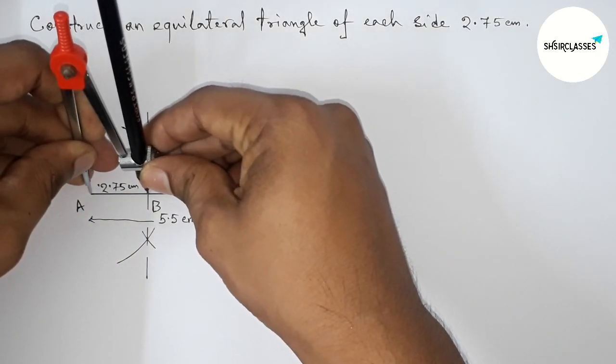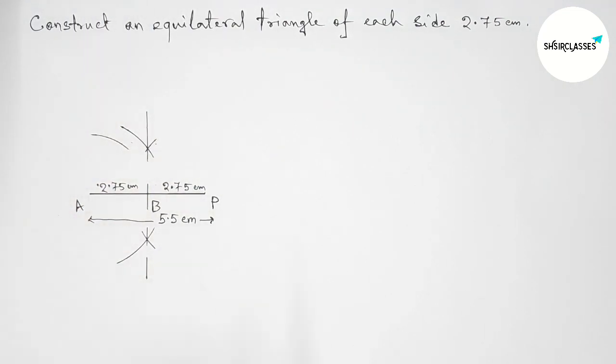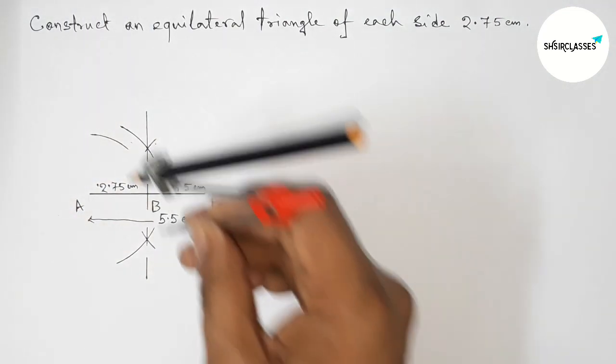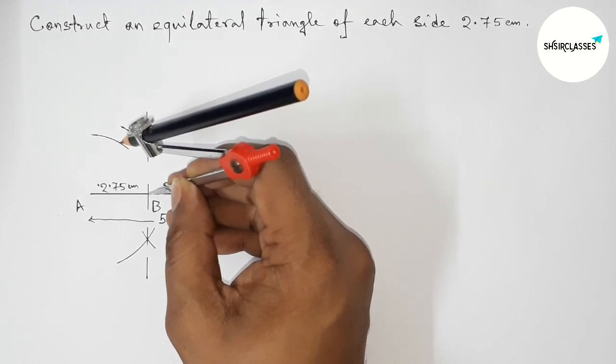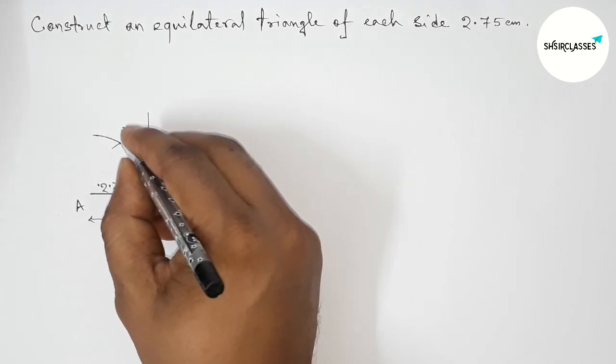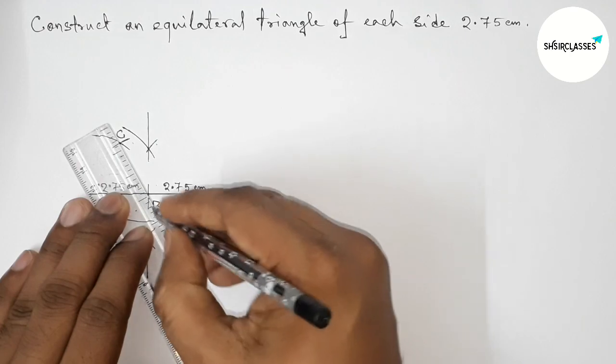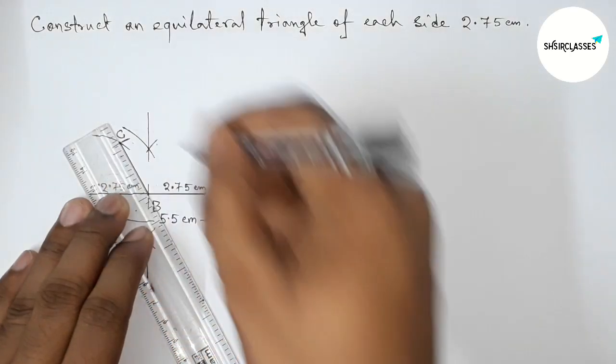Perfect. Now drawing here an arc with same length and putting the compass on point B and cut here. Here both curves intersect at a point C. So now joining B and C.